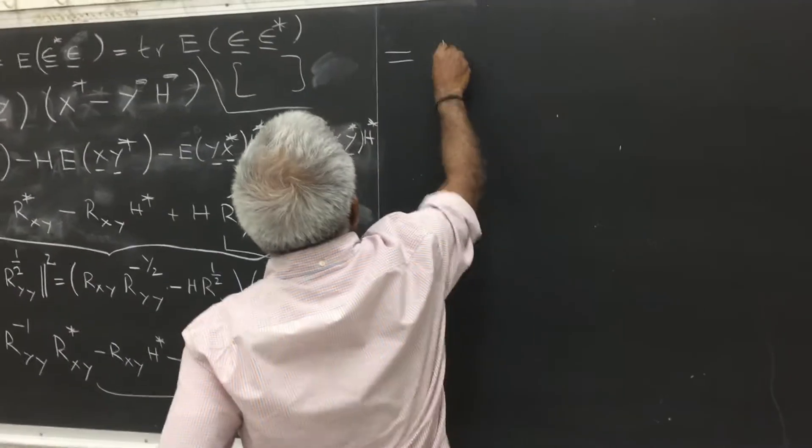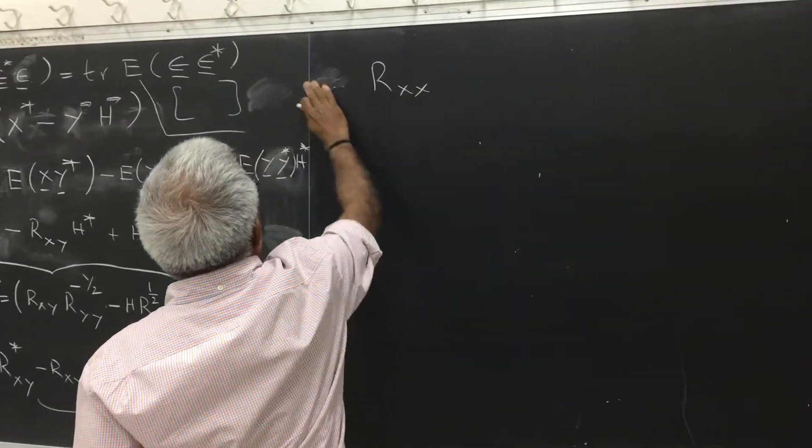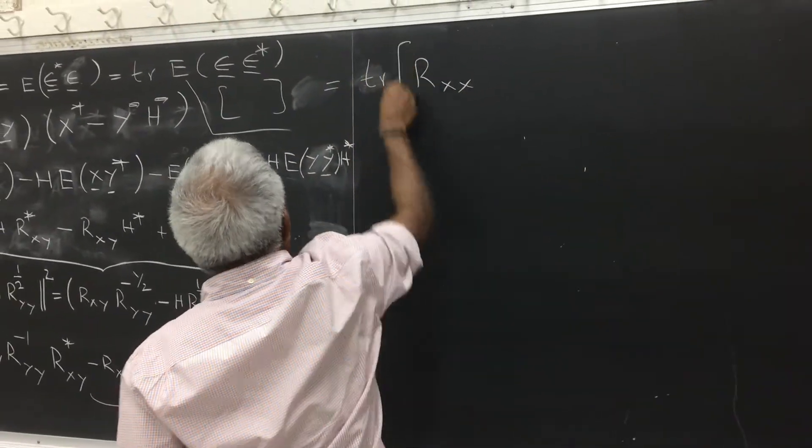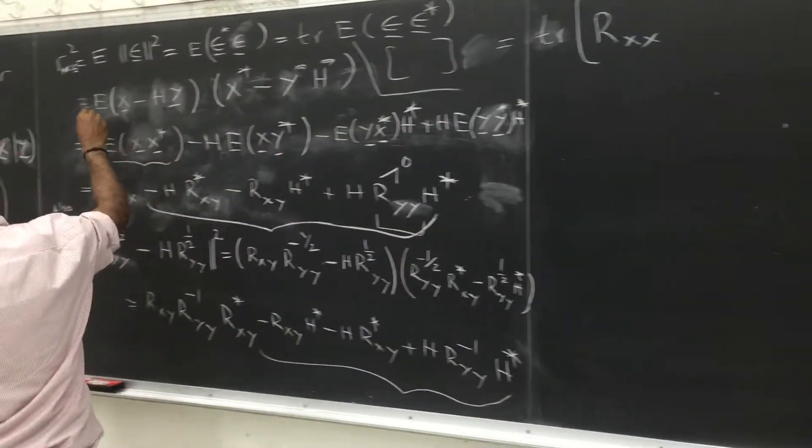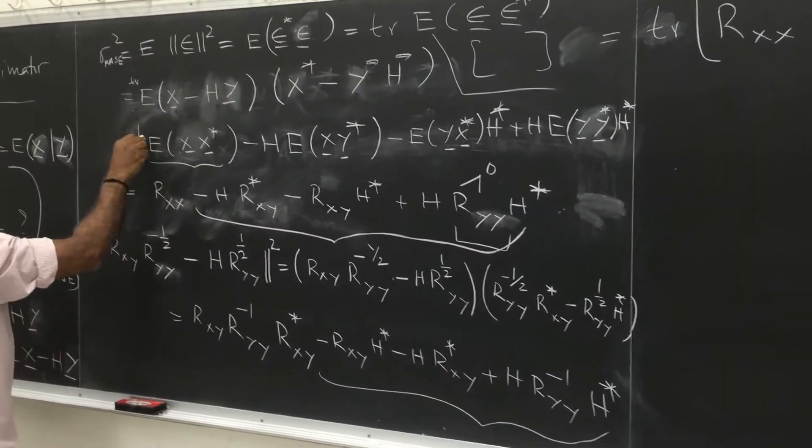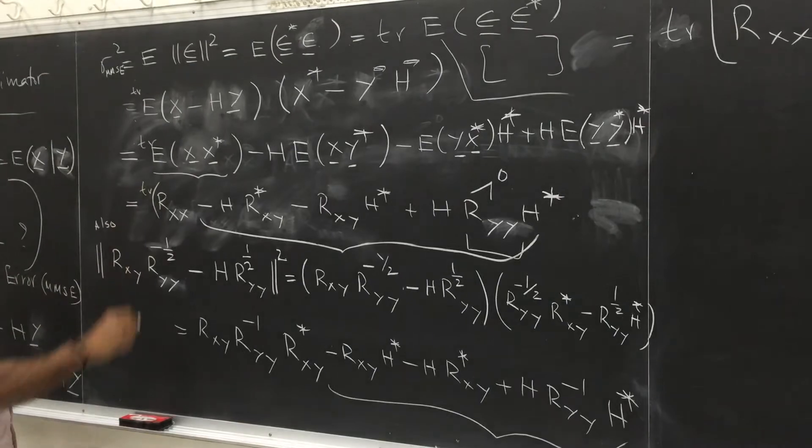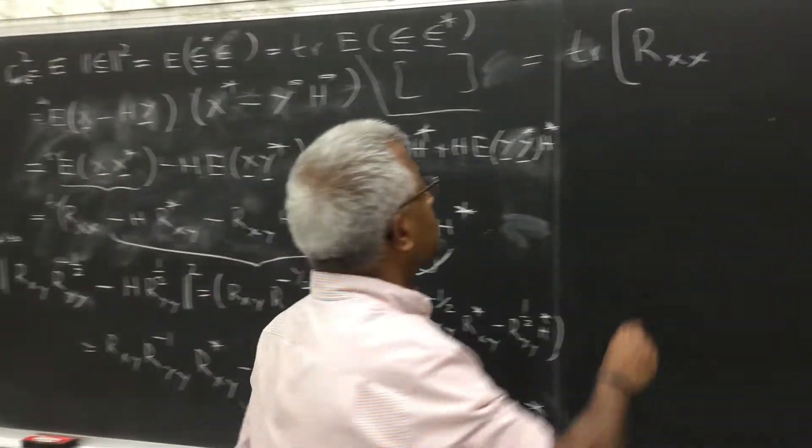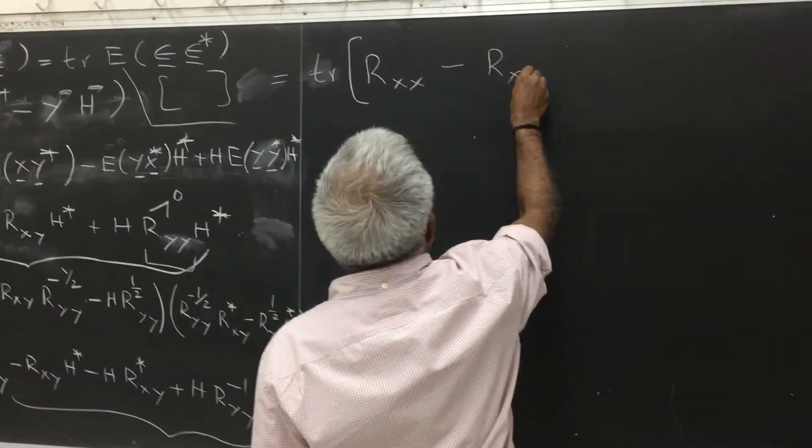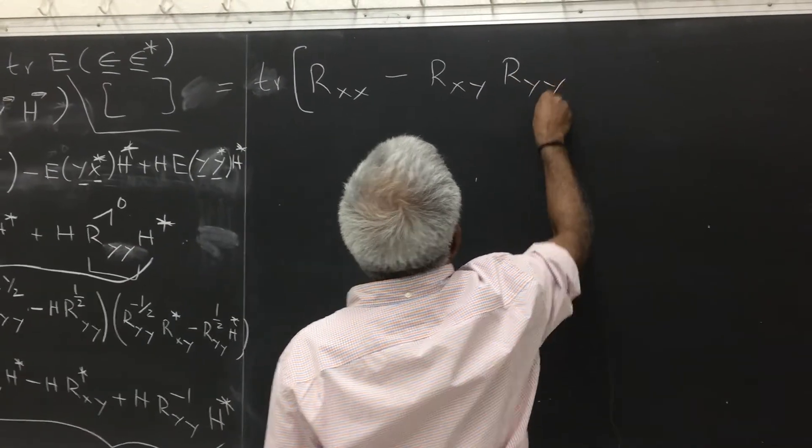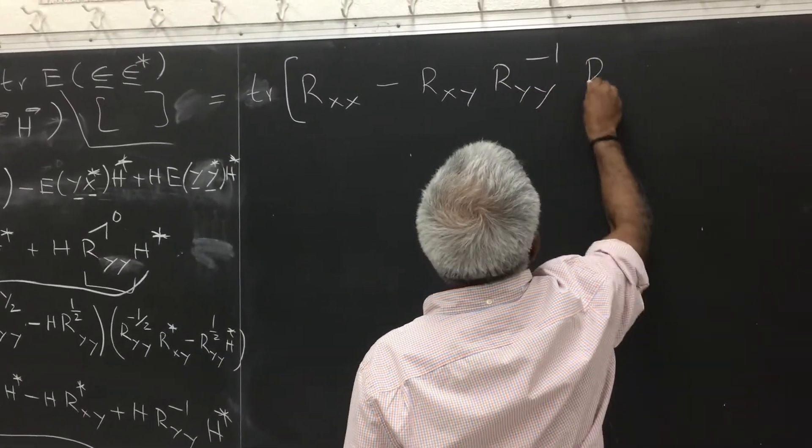Consequently, this error reduces to Rxx. There is a trace here also. There is a trace all over here. So trace of trace of trace. So Rxx minus Rxy, Ryy inverse Rxy.